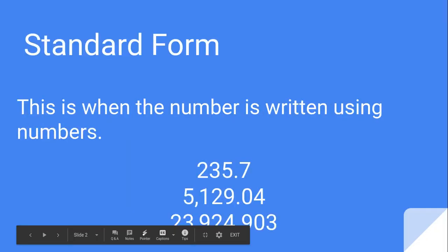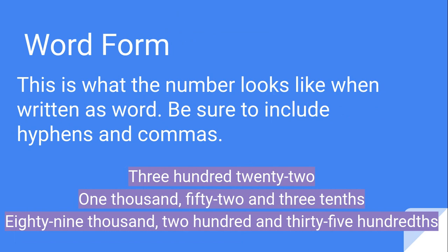Here's standard. It's just when we use the numbers. But word form is when we type what we hear. So if I hear the number 3, I'm going to type T-H-R-E-E.